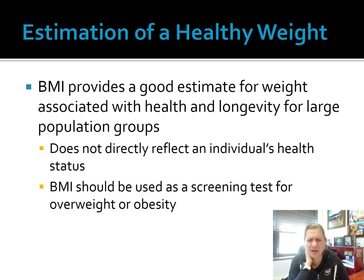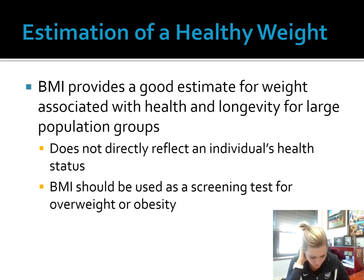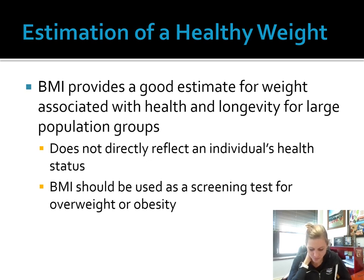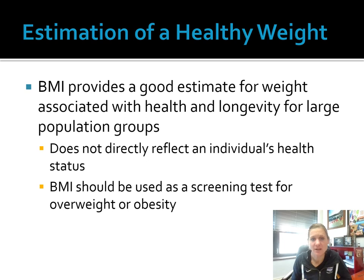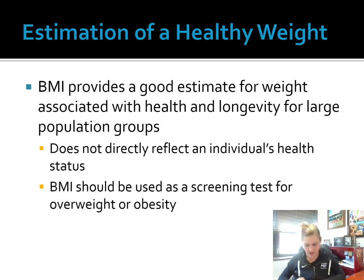How do we know what a healthy body weight is? BMI provides a good estimate for weight; however, it doesn't reflect the individual's health status and doesn't give us any information about body fat percentage. Athletes with large lean body mass but low fat content will have greater healthy weights than sedentary people. So BMI is kind of a screening point or starting point, but then it's important to take a look at some of these other factors to understand someone's health status.